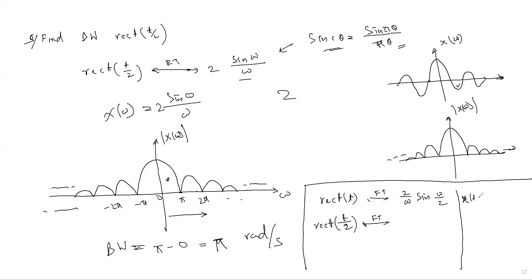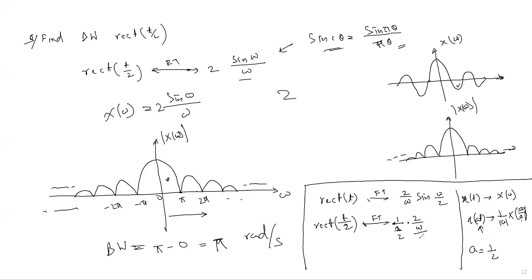Using the scaling property: if x(t) has Fourier transform X(ω), then x(at) has Fourier transform (1/|a|)·X(ω/a). In this case, a equals 1/2, since t is replaced by t/2. So we compute (1/(1/2)) times the original transform with ω replaced by ω/a, giving 2·(2/ω)·sin((ω/a)/2) with a = 1/2.